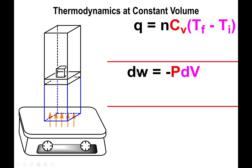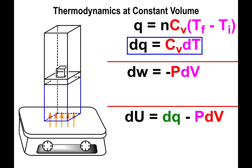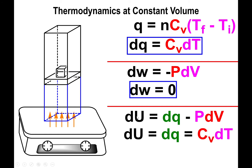The work, which depends on the change in volume, automatically equals zero if the volume is constant. So the change in heat per mole is given by the heat capacity at constant volume times the change in temperature. The work equals zero because the volume is not changing, and then the internal energy simply equals the change in heat, which itself equals Cv times ΔT.